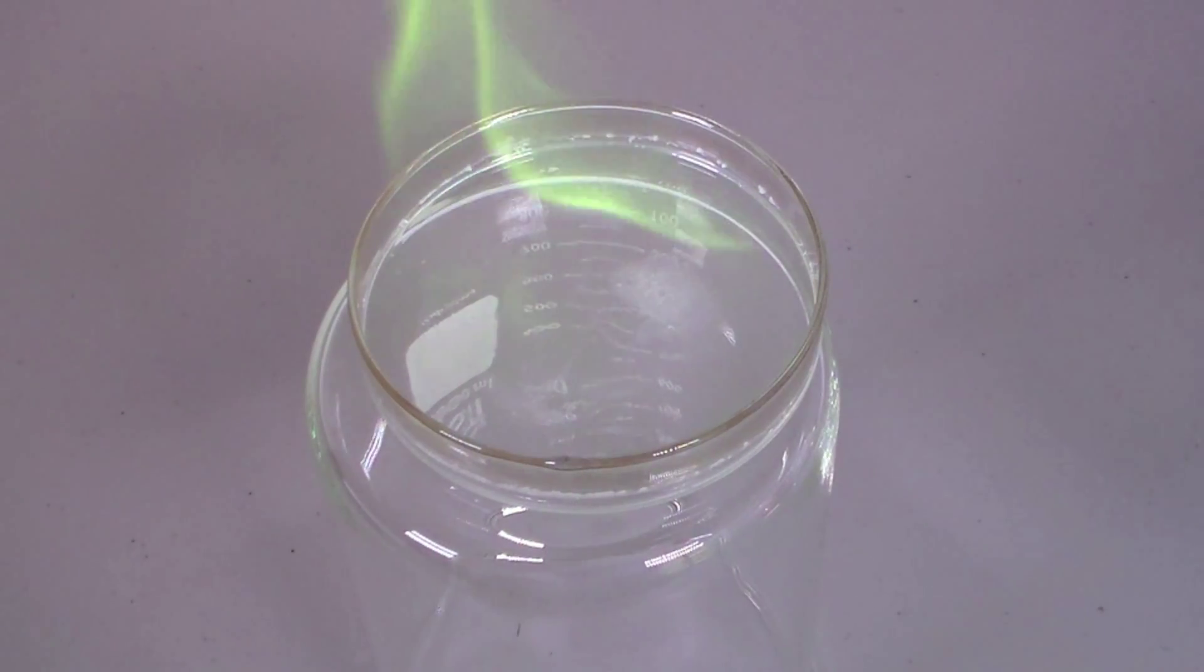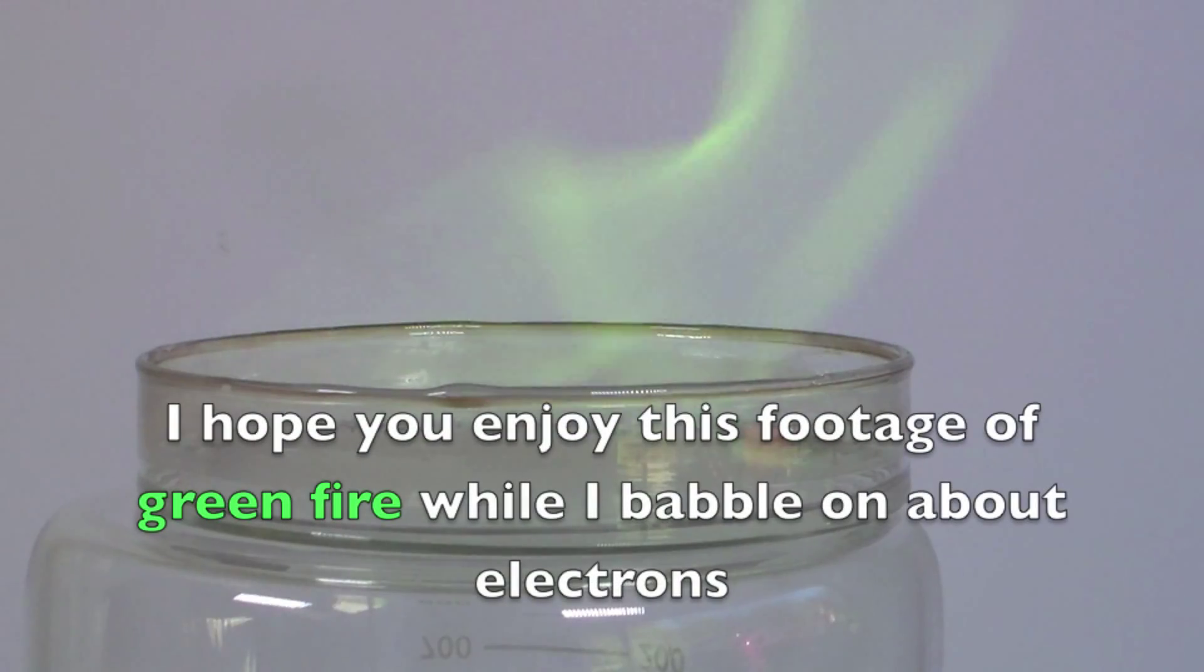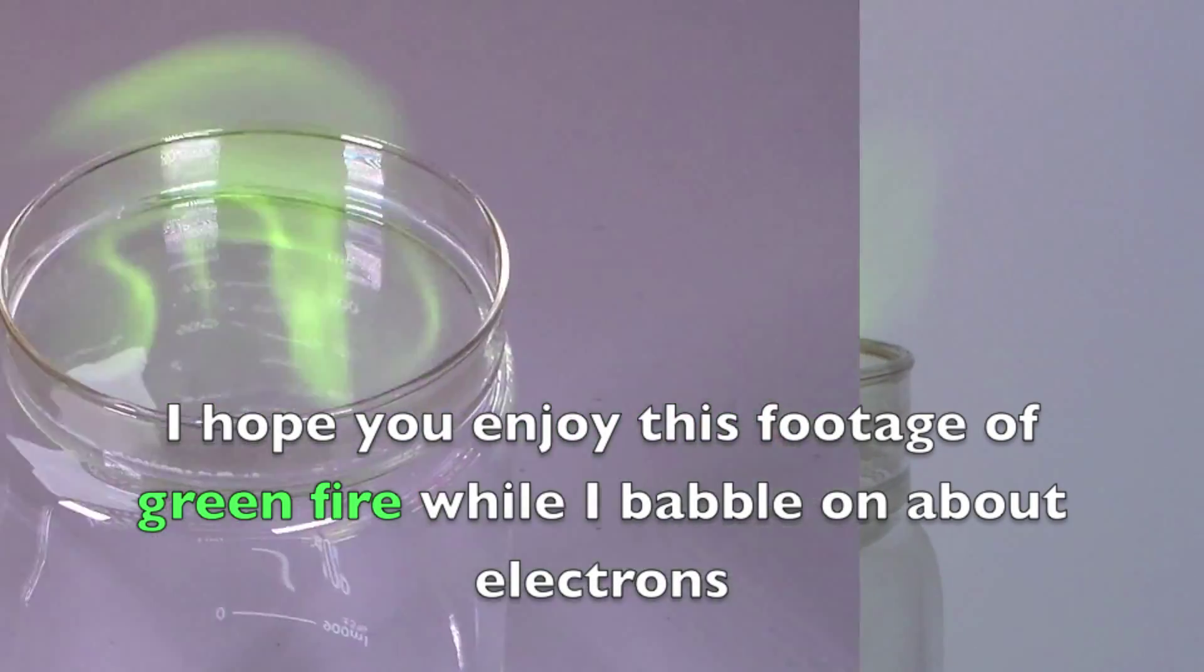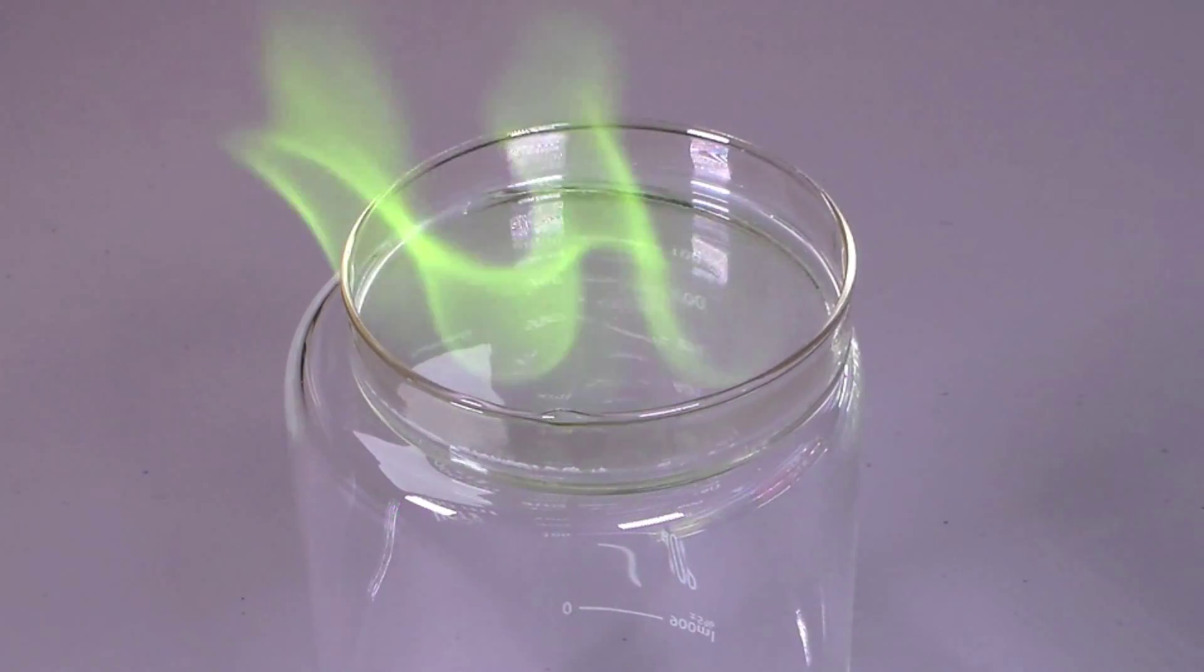In this video I'm not going to explain in detail why different substances burn with different colored flames, but basically the electrons in the boron atoms gain energy from the heat of the burning methanol. When they release this energy it is visible to us as green light.